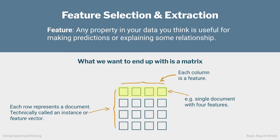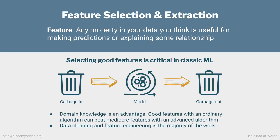In classic ML, selecting good features is critical. The adage 'garbage in, garbage out' applies. Going back to our farming example, a feature like the color of the farmer's hat is likely irrelevant and will yield poor results. This also means that having domain knowledge is often an advantage. Even today, creative and high-signal features with an ordinary algorithm can often beat mediocre features with a state-of-the-art algorithm. And since most day-to-day models are well understood and implemented, feature engineering is often the bulk of the work in classic ML.